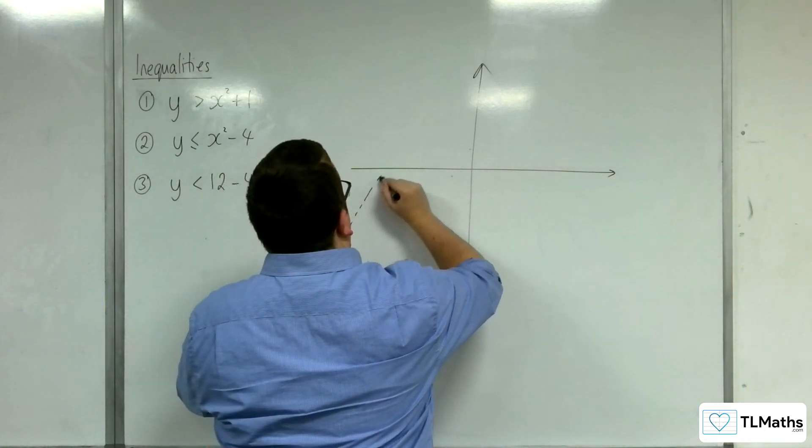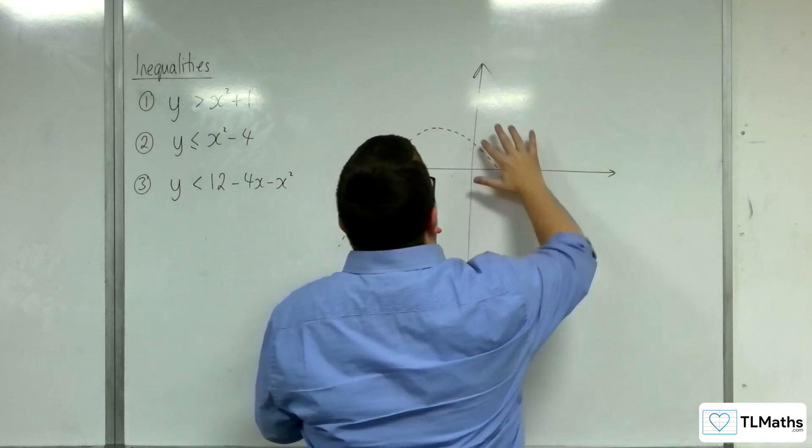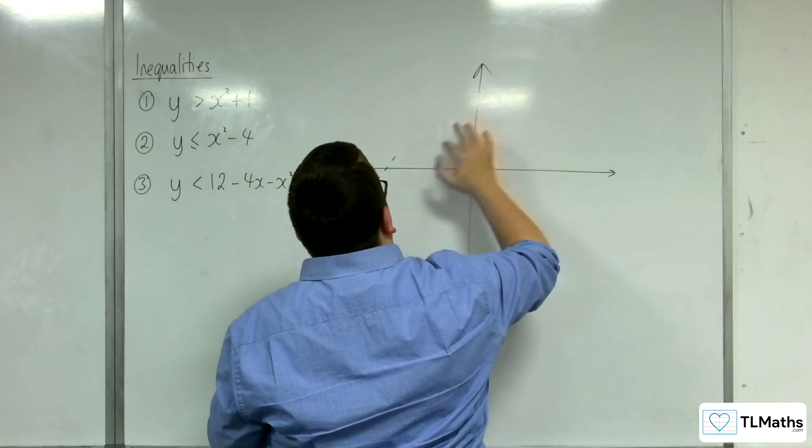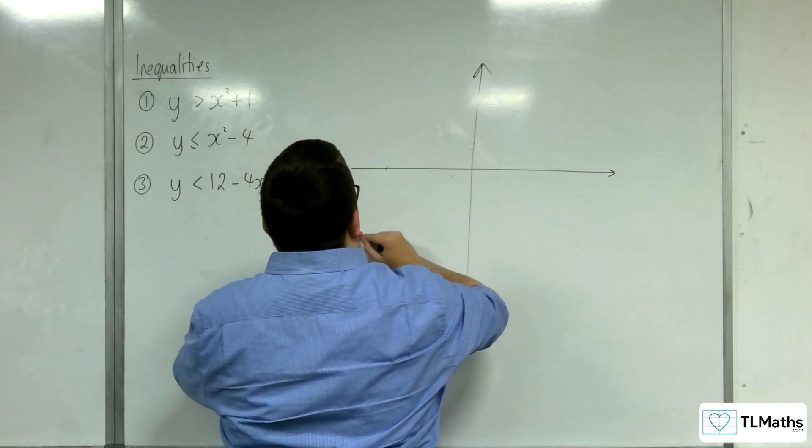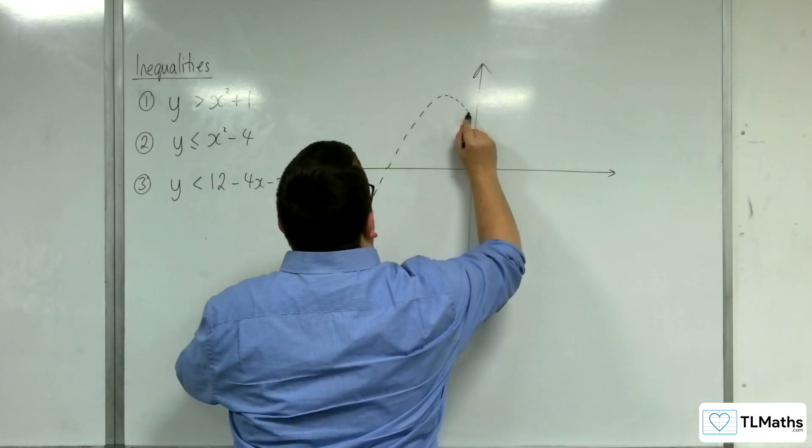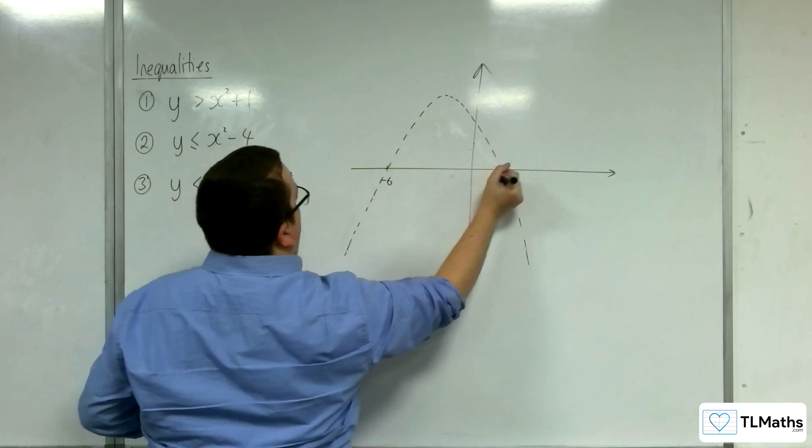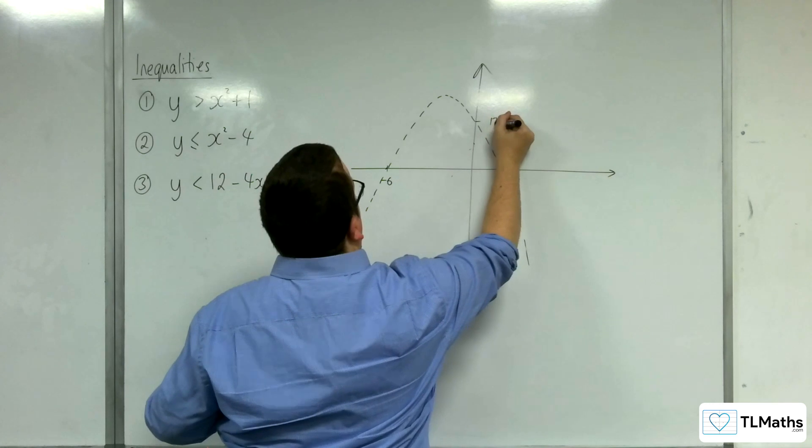So, something like – oh, that was bad. That was bad. Right. I was thinking about it too much, I think. All right. Let's just try that again. Right. Something like that. Okay. So, minus six and two. And that's 12. Okay.